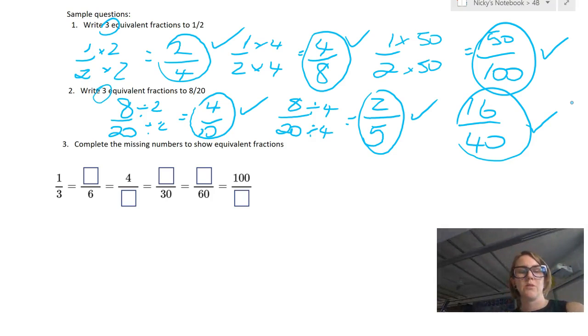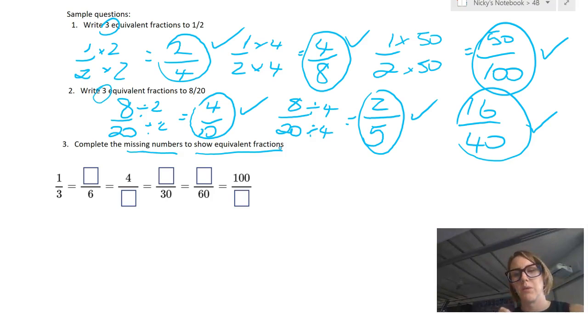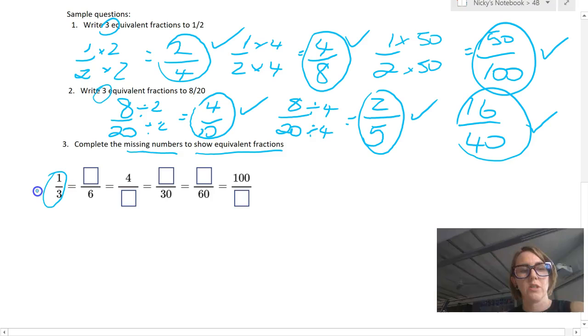Okay. Another style of question is where you're given a numerator or a denominator and you're asked to fill in the blanks. So this one says, complete the missing numbers to show equivalent fractions. So for these questions, unlike the ones above, there's really only one correct answer because they've given you part of the fraction already.